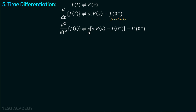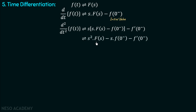Multiplying through, we get s²·F(s) minus s·f(0⁻) minus f′(0⁻), and this is the Laplace transform of the second order derivative of f(t). So whenever we differentiate a function in the time domain, by the time differentiation property, its Laplace transform is multiplied with s and its initial value is subtracted.